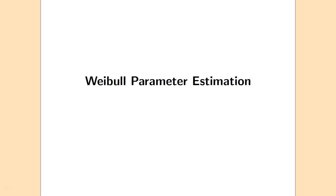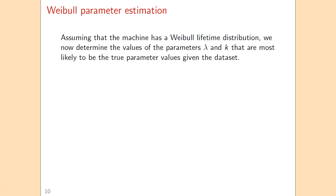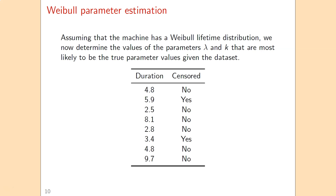For Weibull parameter estimation, the question is: given a dataset, which Weibull distribution is most likely to be the true one? We assume a machine has a Weibull lifetime distribution and would like to determine the values of lambda and k that are most likely to be the true parameter values, given the available data.